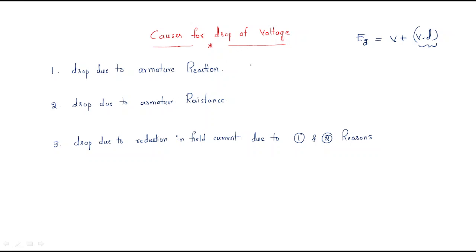The second cause of voltage drop is due to armature resistance. The drop is IA × RA, where RA is the armature resistance. The drop due to armature reaction is represented as IA × Xa, where Xa represents the armature reaction.